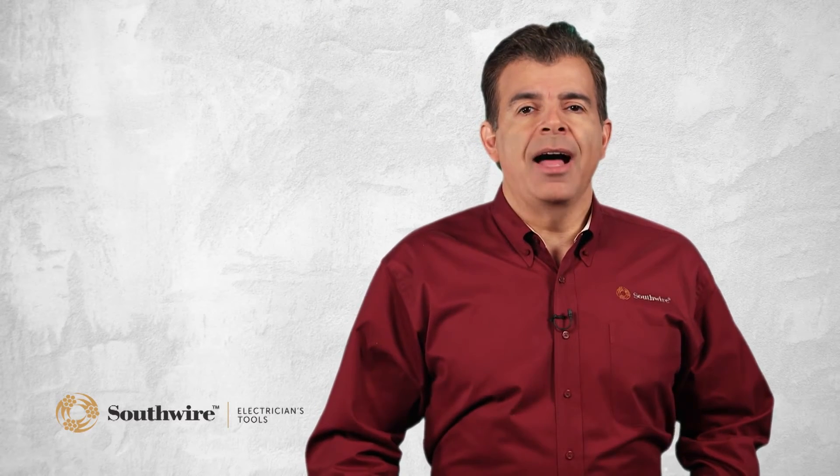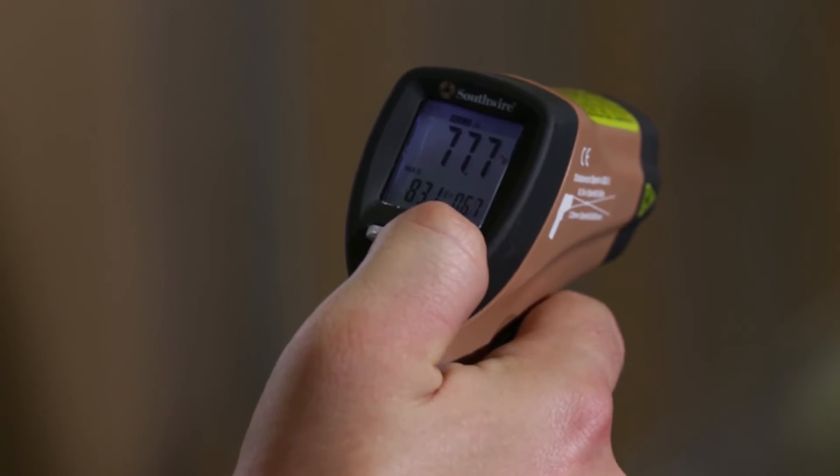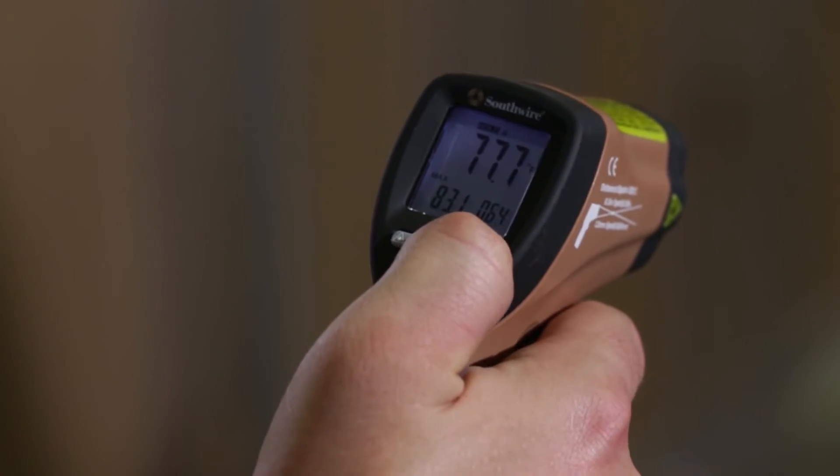Temperature alarm is another important feature. On IR thermometers with this feature, the user can go into the menu and set the temperature point where the alarm will sound for both high and low temperature. This feature ties in nicely with the fast response time.